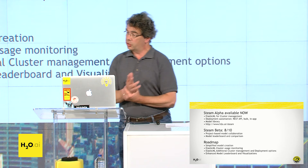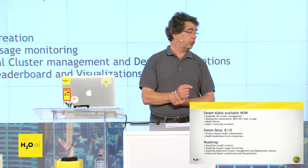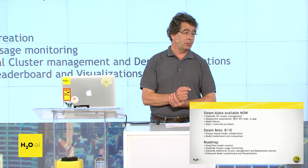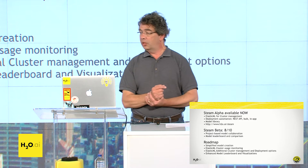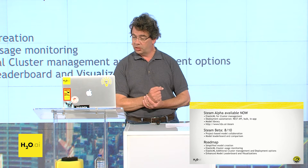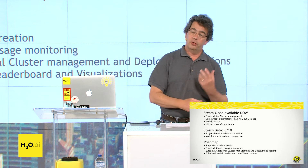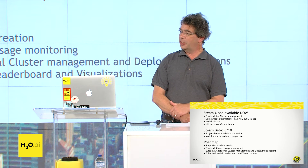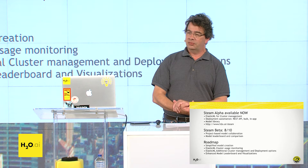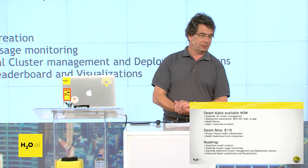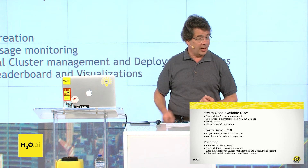On our roadmap, because there is a lot to do in Steam, we are going to simplify the model creation process. Flow makes it pretty easy, but we can make it even easier. Tony and his team are doing a lot of work to make it even simpler to create your models. Better cluster management is another area — we heard from customers: I have this big cluster, my data scientists are doing their work on it, but they've taken 15 nodes and gone off for lunch. I want to use those nodes for something else. How do I know what's going on? We want to add that in as well.